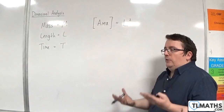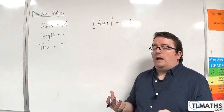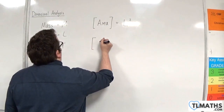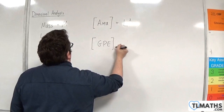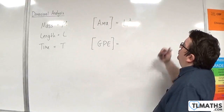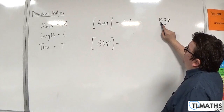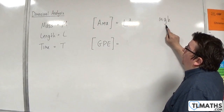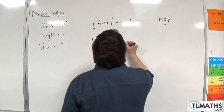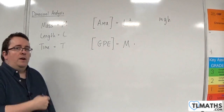Let's consider another couple of things that we work with. Let's say GPE, for example — gravitational potential energy. What are the dimensions of gravitational potential energy? We know that the formula for GPE is mgh, so that is a mass times by an acceleration times by height, which is a length. You have a mass, which is capital M, and then you've got an acceleration.